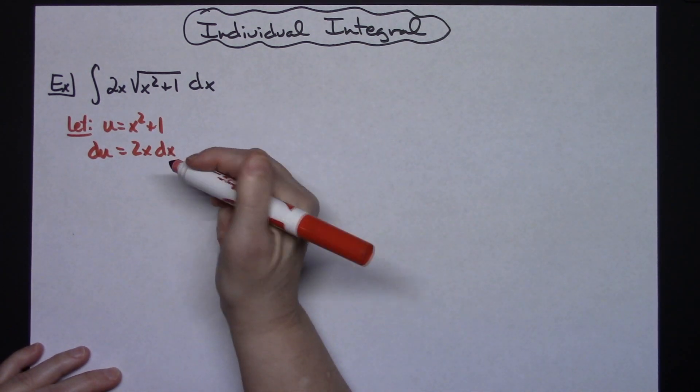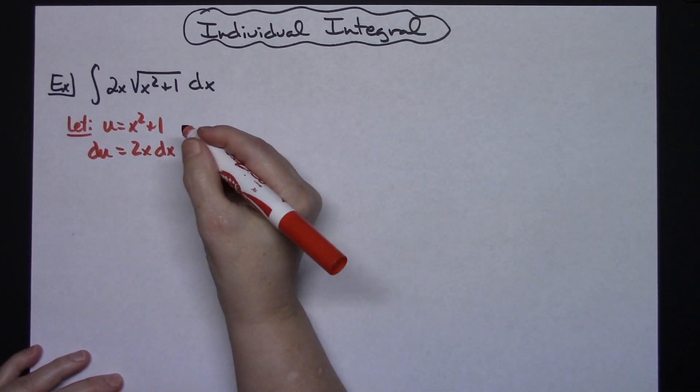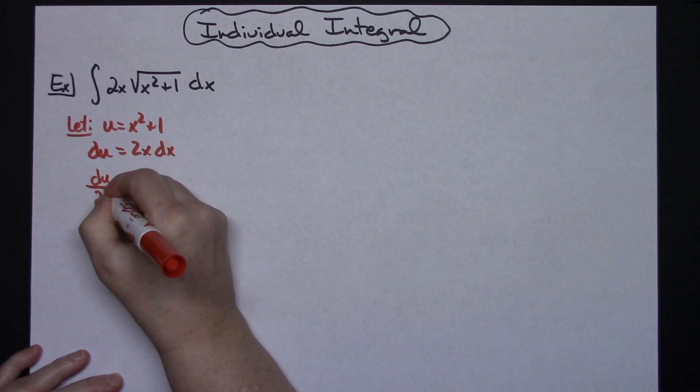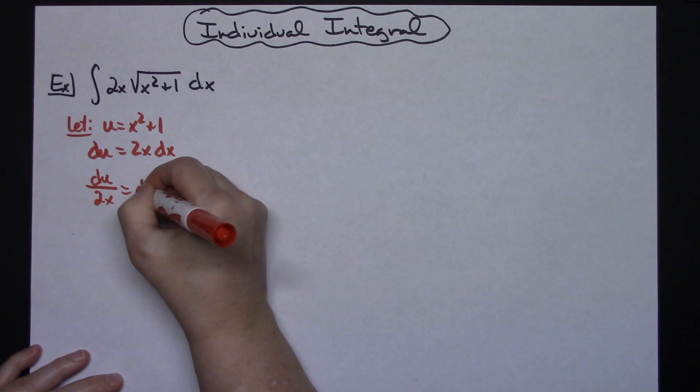Now to make our substituting a little bit easier, I'm going to go ahead and solve all the way down for dx. So I'll have du over 2x is equal to dx.